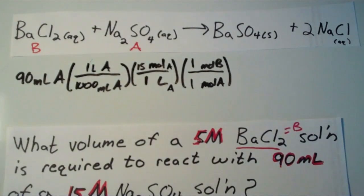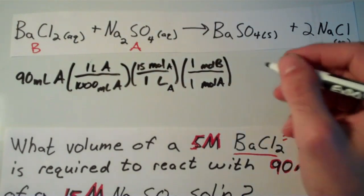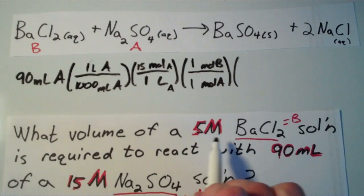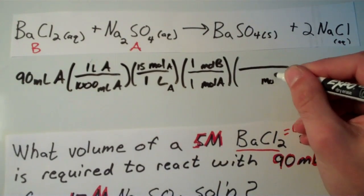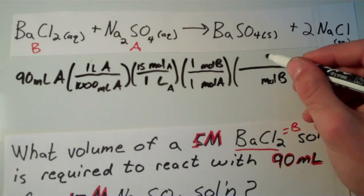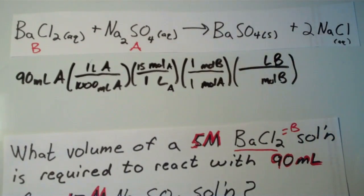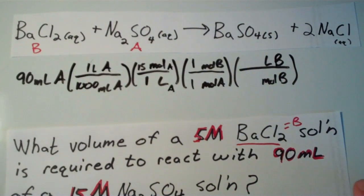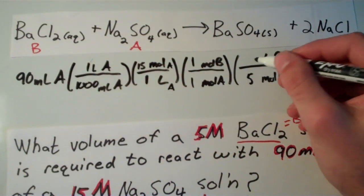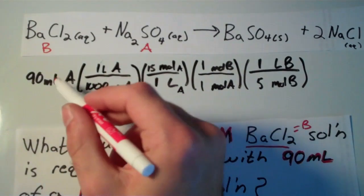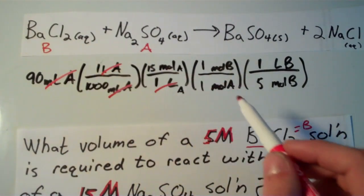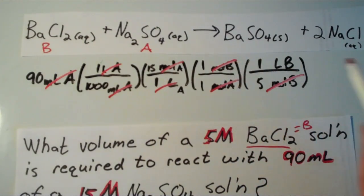So now that we have moles of B, we can convert that into the volume of B using the molarity of B. And the original problem says what volume of a 5 molar solution of B, or BaCl2. So I'm going to put my moles of B on the bottom. I'm going to put my liters of B on the top. Because remember, molarity is moles per liter. And our solution is 5 molar, so we're going to say 5 moles of B for 1 liter of B. And now at this point, we just have to make sure all of our units cancel. We have a lot of conversions here, so it's a wise decision to make sure, double check that our units cancel. Looks like milliliters of A cancels, liters of A cancels, moles of A cancels, and finally moles of B cancels. And we're left with nothing but liters of B.